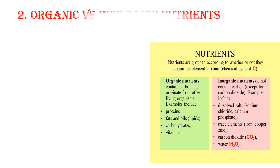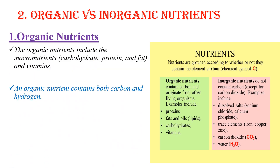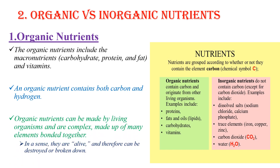The next classification is organic versus inorganic. Organic nutrients include macronutrients such as carbohydrate, protein, fat, and the vitamins. An organic nutrient contains both carbon and hydrogen. Organic nutrients can be made by living organisms and are complex, made up of many elements bound together. In essence, they are alive and therefore can be destroyed or broken down.